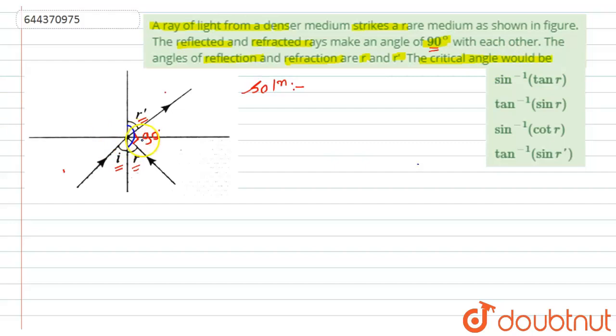So first of all if you look at here, this complete angle is of 180 degrees. And if I will subtract this 90 degrees from 180 degrees, so can I say that the value of r plus r dash will become equals to 90 degrees.